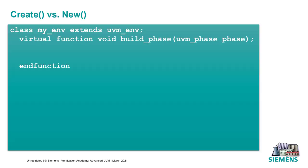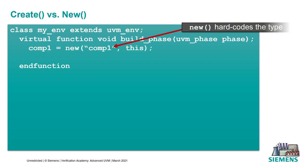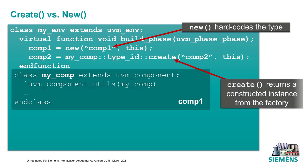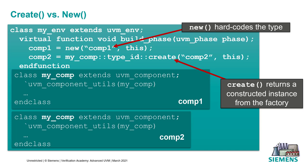In SystemVerilog, when we instantiate an object, we have to construct it. The constructor is the function called new, and we provide the name of the component and a pointer to the parent. So we have a component of type myComp, we allocate it using the constructor, and assign it to the handle comp1. In UVM, instead of using the constructor, we use a method called create, which allows us to get an instance of that component from the factory. The factory is the thing that gives us this flexibility.